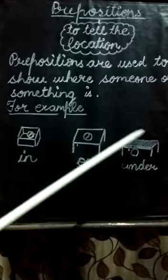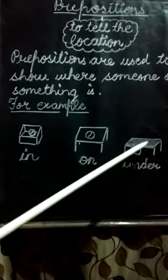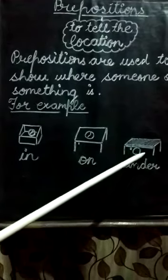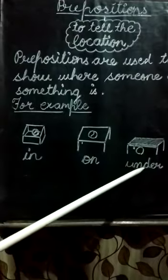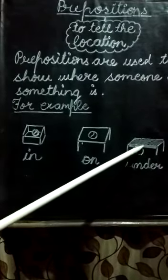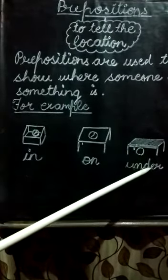Under. Here in this picture, the ball is situated below the table. The location of the ball is below the table. For this location, we use the word under. The ball is under the table.